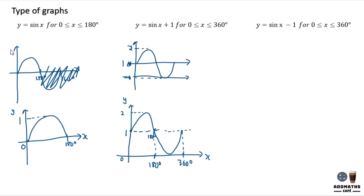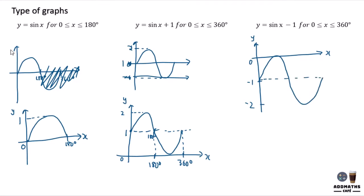Same goes for sin x minus 1 — the whole graph goes down. Your x-axis will be on the most top here. From 0, it starts at negative 1, and the minimum is negative 2. From negative 1, it goes up and goes down, touches negative 2, and ends with negative 1. The last part will be 360 degrees and the middle part will be 180 degrees. The minimum will be negative 2 and the maximum will be negative 1.